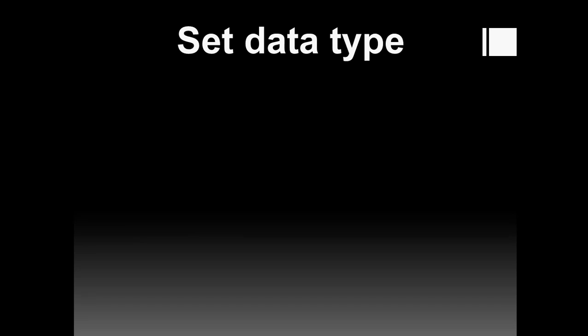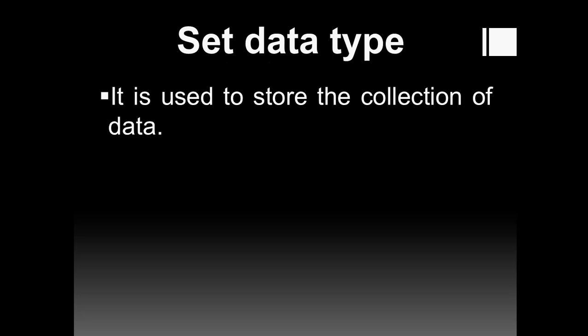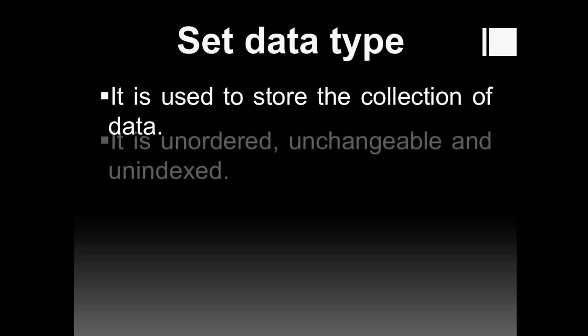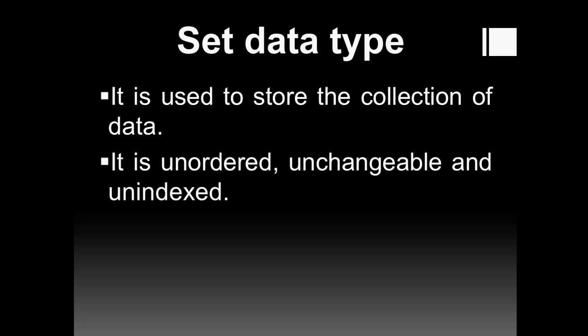The next data type is set. Set ka matlab kya ho gaya — joh data ko set kar diya, assign kar diya values ko, woh set ho gaya. It is used to store a collection of data. The data in the set data type is in unordered form, unchangeable form, and unindexed form.